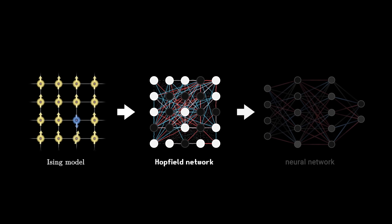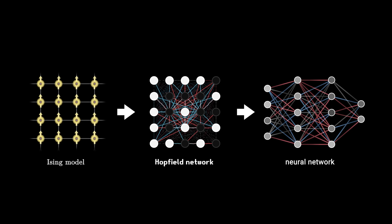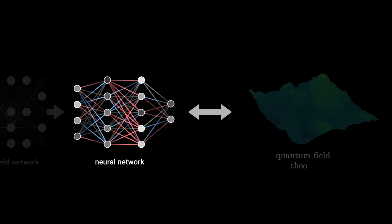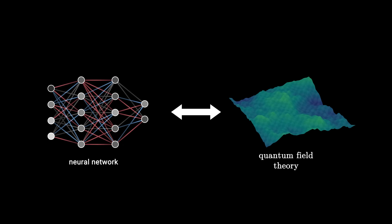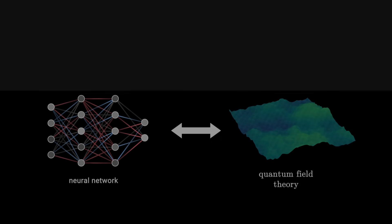We've seen so far that physics has influenced the development of artificial intelligence. But it turns out there's another, perhaps less known connection, between neural networks and fundamental physics. To understand it, we'll have to open a technical parenthesis.